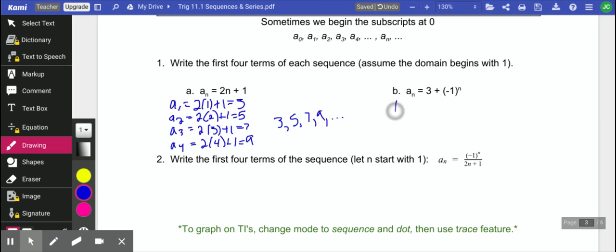Let's check out the next one. To find the first term, we have 3 plus negative 1 to the first. That will be 2. 3 plus negative 1 squared. That's going to make that a positive 1. So 4. 3 plus negative 1 cubed. That's going to be negative 1 again. And 3 plus negative 1 to the fourth. That's going to be a positive again.